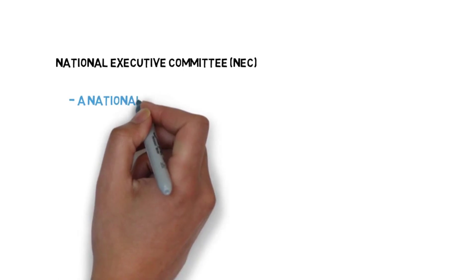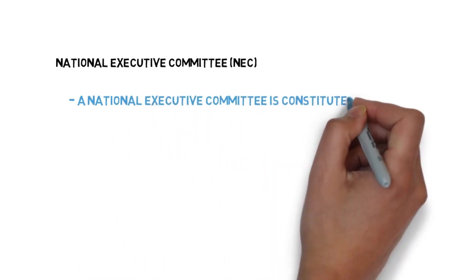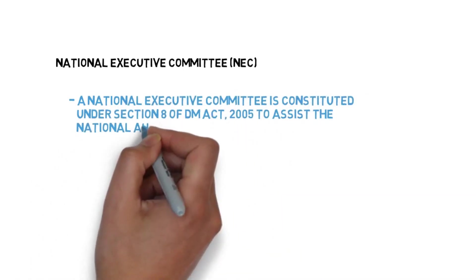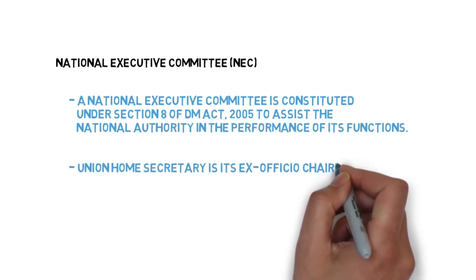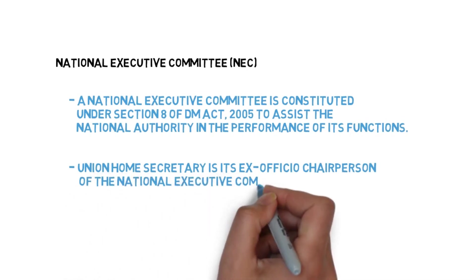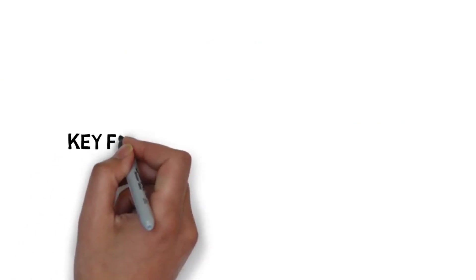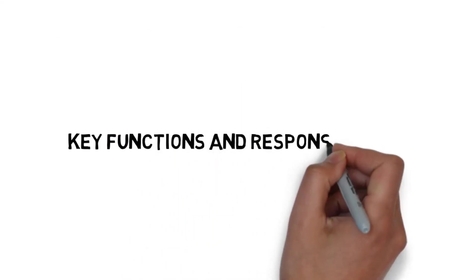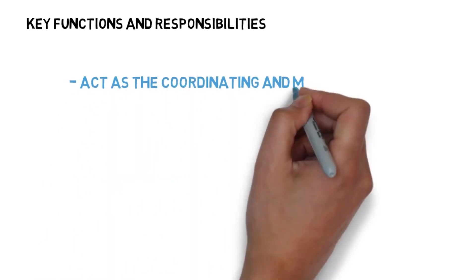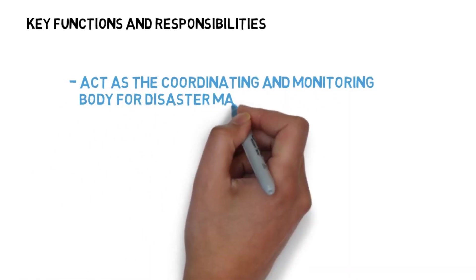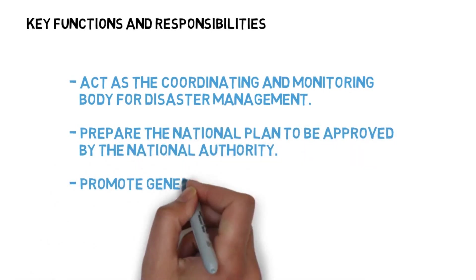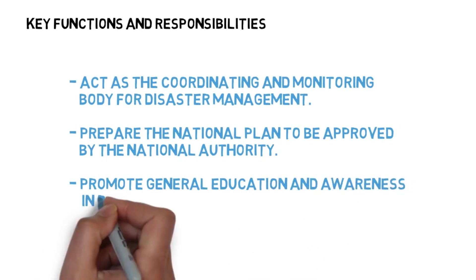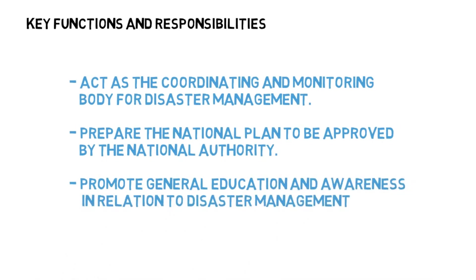The National Executive Committee was constituted under Section 8 of the Disaster Management Act 2005 to assist the national authority in the performance of its functions. The Union Home Secretary is its ex-officio chairperson. Key functions include acting as a coordinating and monitoring body for disaster management, preparing national plans to be approved by the national authority, and promoting general education and awareness in relation to disaster management.